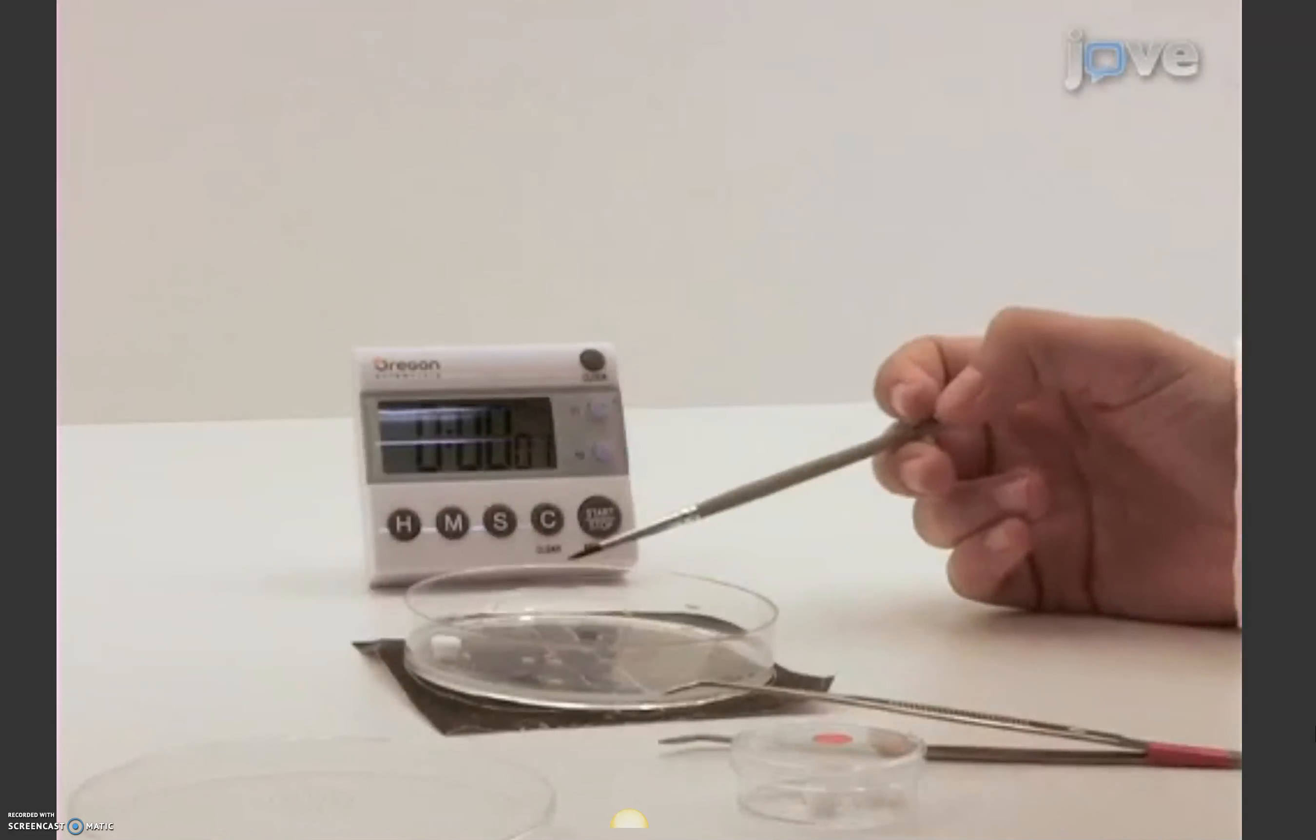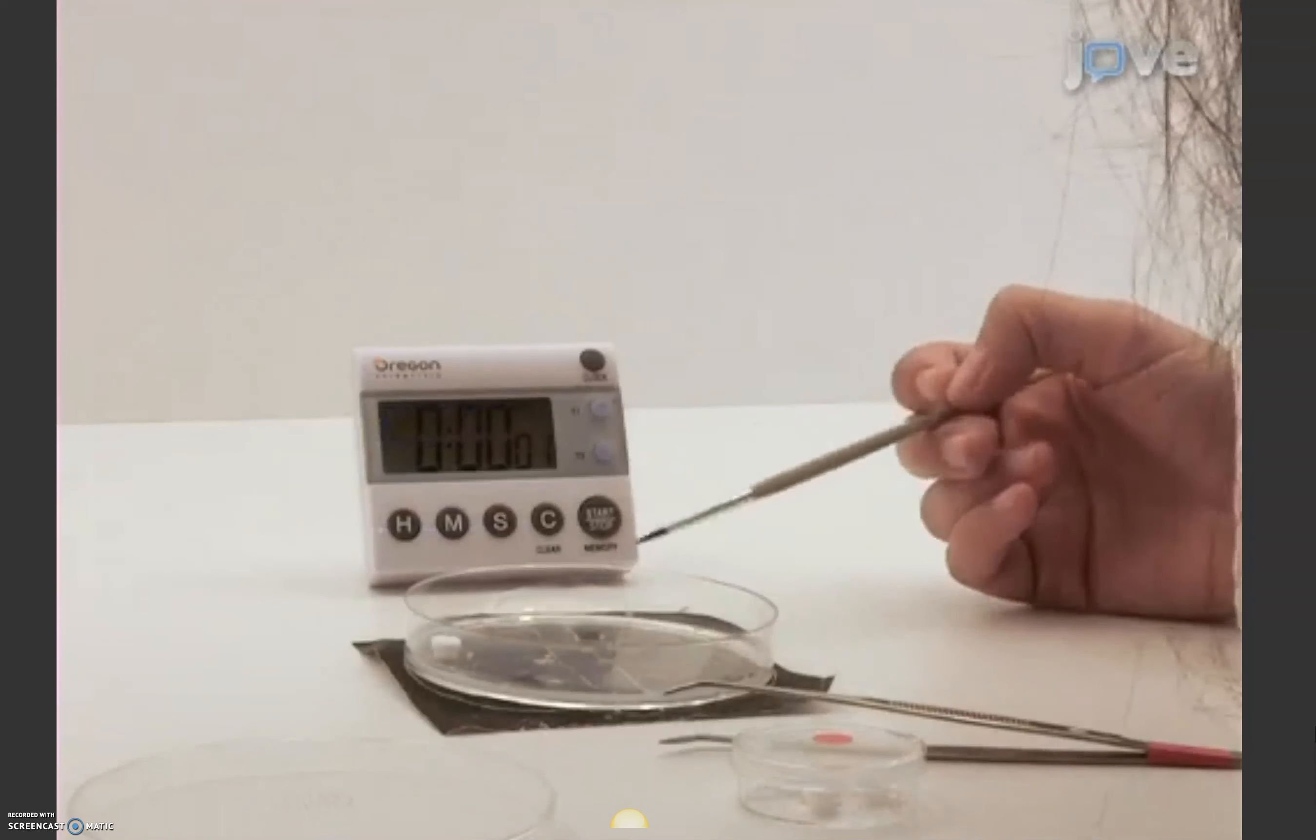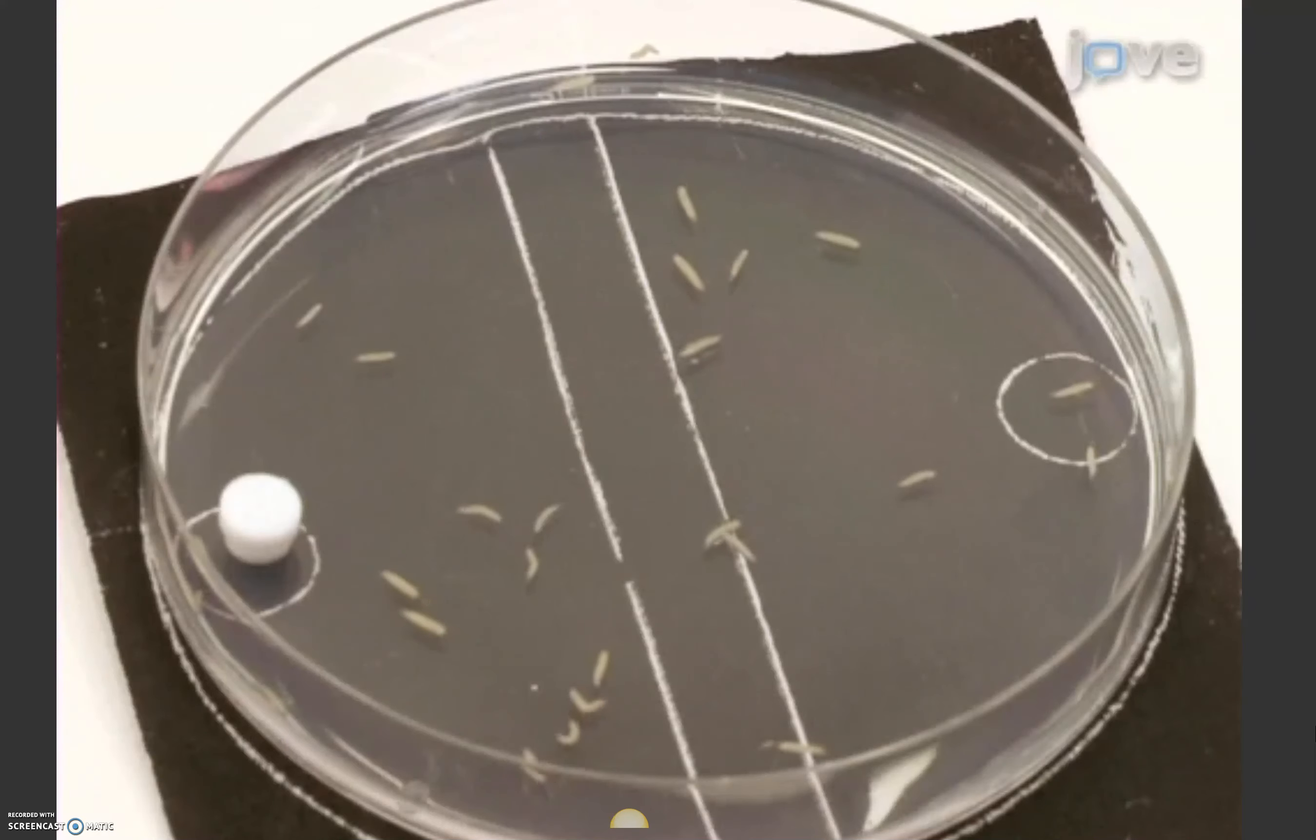Subsequently, using a template, count the number of larvae on the near side, in the middle and on the far side of the dish relative to the stimuli. Perform this test for each stimulus used in the experiment.